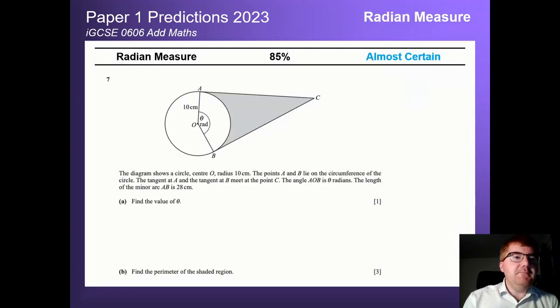On to radian measure, which is almost certain on paper 1. Again, you can usually recognize this by seeing rad in the question in some way and you'll be exploiting those formulae for the arc of a sector and the area of a sector using radians. You can tie in a little bit of circle theorems as well as you can see in this question, so make sure you've done a lot of that pre-maths on the other courses for IGCSE.